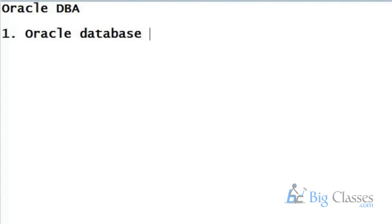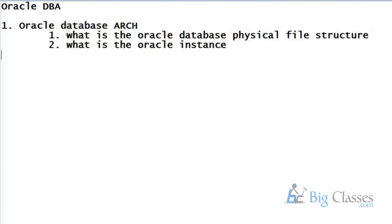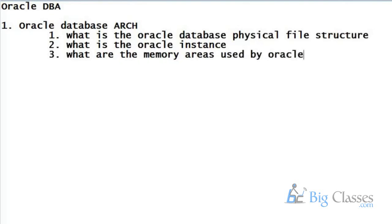The first thing in Oracle Database Administration that we are going to study is the Oracle Database Architecture. The architecture of Oracle Database will clarify what is the Oracle Database file structure, what is the Oracle install, what are the memory areas used by Oracle, and what are the background processes used by Oracle.